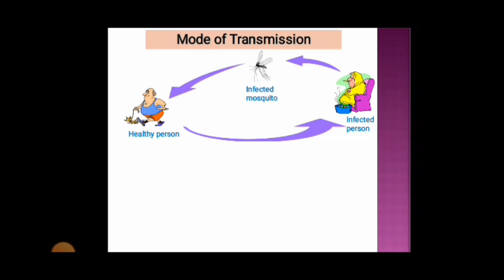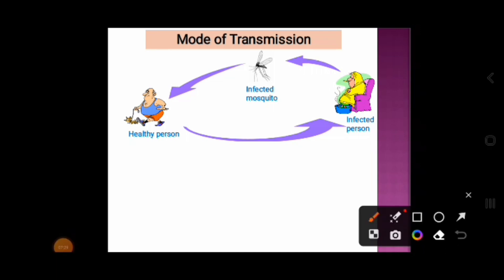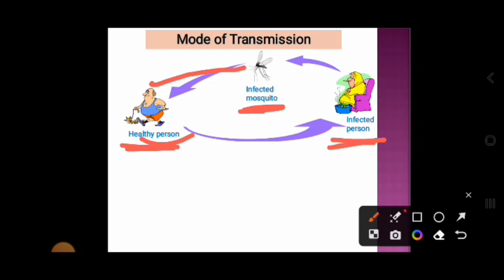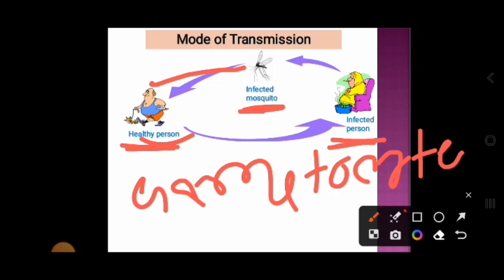Now let's discuss the mode of transmission. When a female Anopheles mosquito takes a blood meal from a malaria-infected person, it ingests the malaria parasite and becomes infected. When this infected mosquito then takes a blood meal from a healthy human, it injects malaria parasites into that person, who then becomes infected. Within some time, the symptoms of malaria appear. When the mosquito bites an infected person, it ingests the gametocyte stage of the malaria parasites.